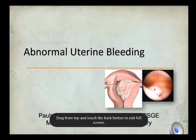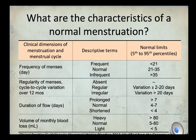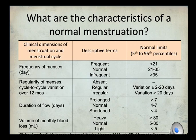Abnormal uterine bleeding encompasses any significant deviation from normal frequency, regularity, duration, and volume of menstrual bleeding. The characteristics of normal menstruation: the mean interval is 28 days plus or minus 7 days. Bleeding that occurs at intervals less than 21 days or more than 35 days is considered abnormal. The mean duration of normal menstrual flow is about 4 days, and bleeding for longer than 7 days is considered prolonged.